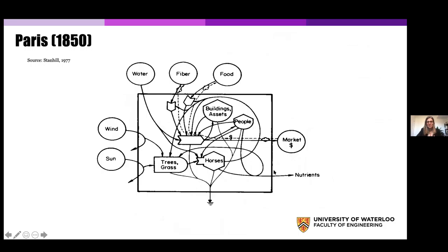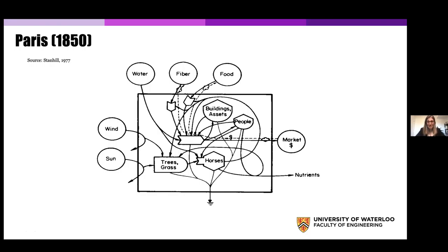This is Paris — published in the 1970s, but capturing data from 19th century Paris. You can see inputs of water, wind, sun, fiber, food, and monetary market flows. What's interesting here is that the activities within the city of Paris show horses. If you remember that this is 19th century Paris, that was the form of transportation then. So it is still plotting the buildings, assets, and transportation.